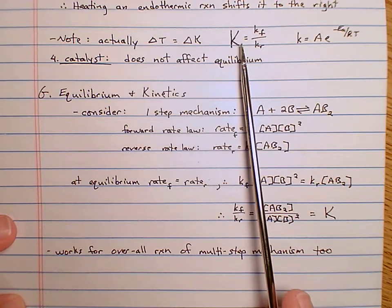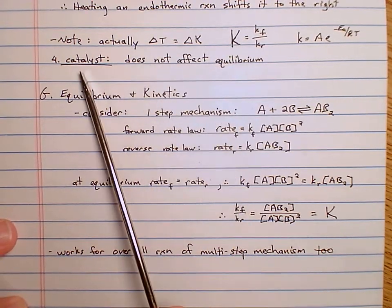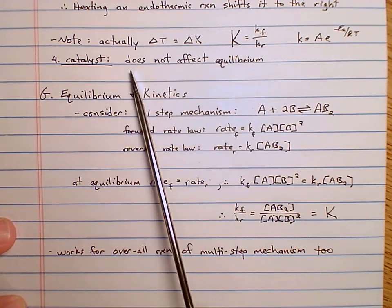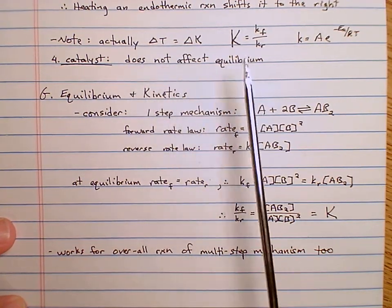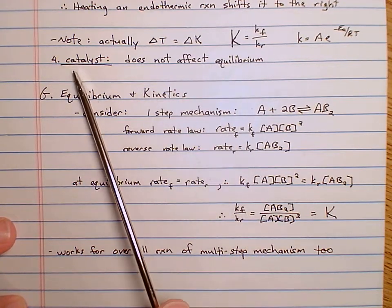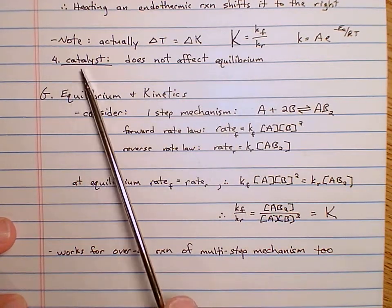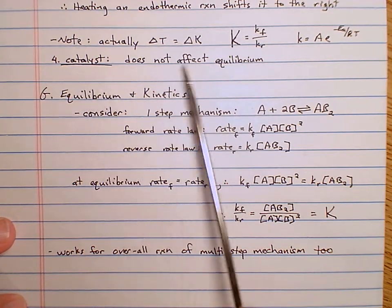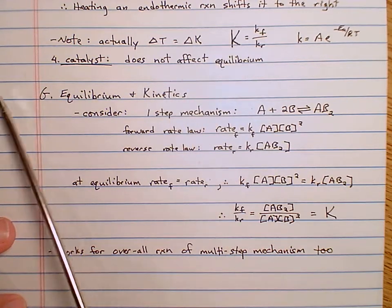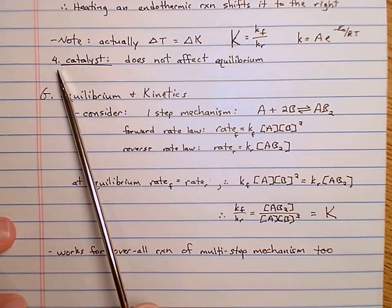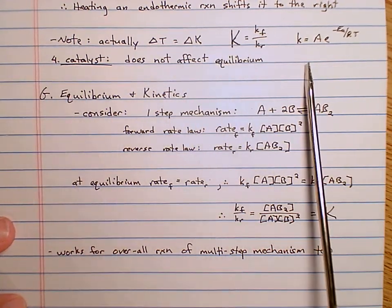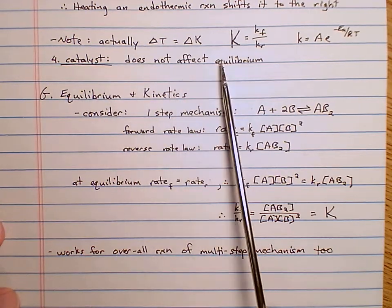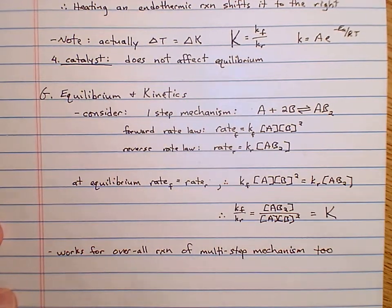One more thing to plug in here: if you add a catalyst to your reaction, the catalyst does not affect the equilibrium. A catalyst makes a reaction happen faster but does not affect the equilibrium — catalysts do not make the equilibrium go more to the right or left. They only affect rates.